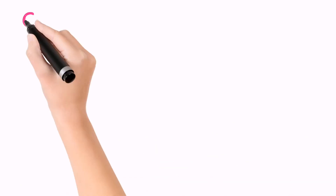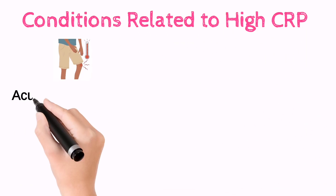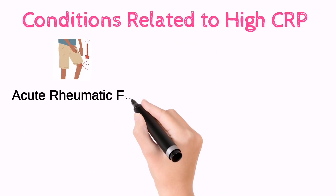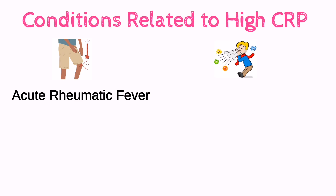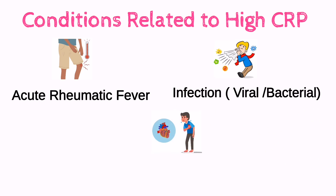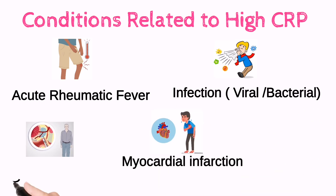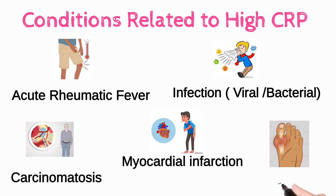Conditions in which CRP becomes high: these are acute rheumatic fever, infections like bacterial or viral, myocardial infarction, carcinomatosis, and gout disease, etc.